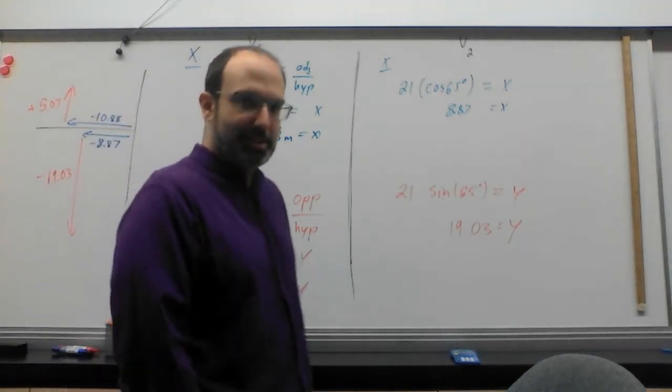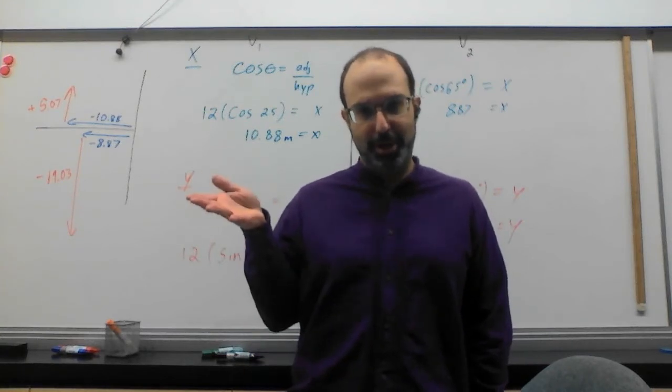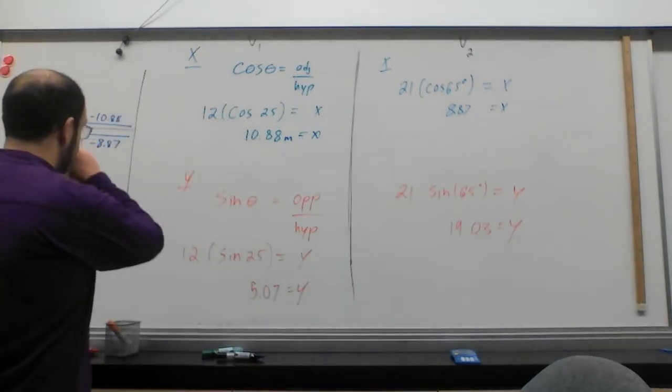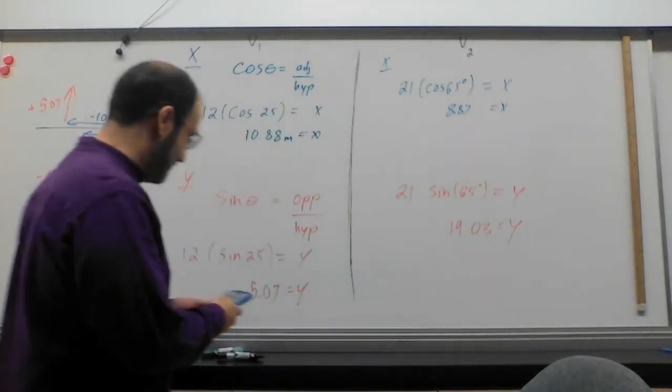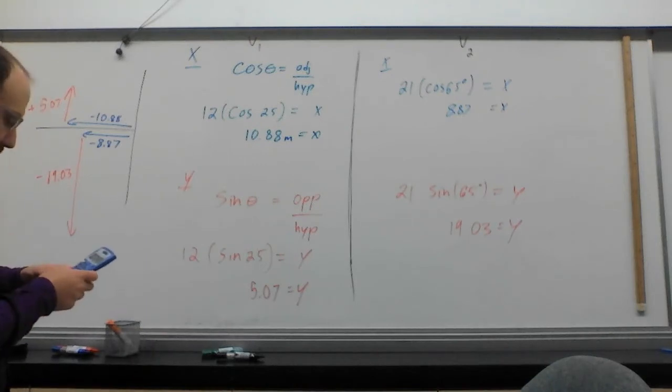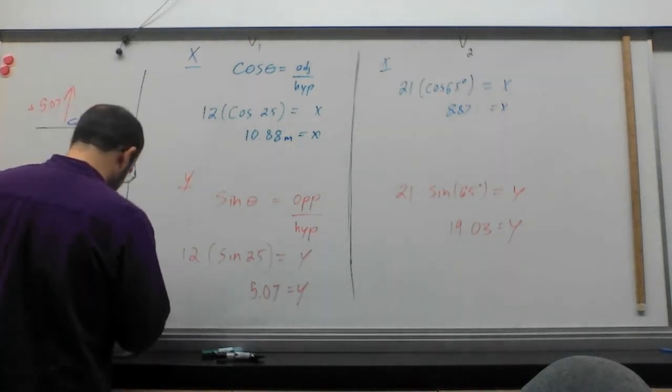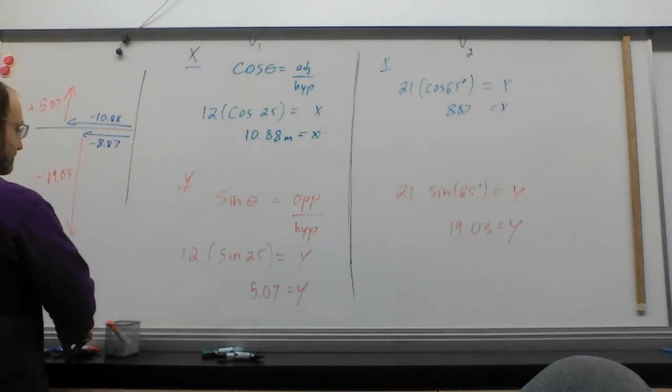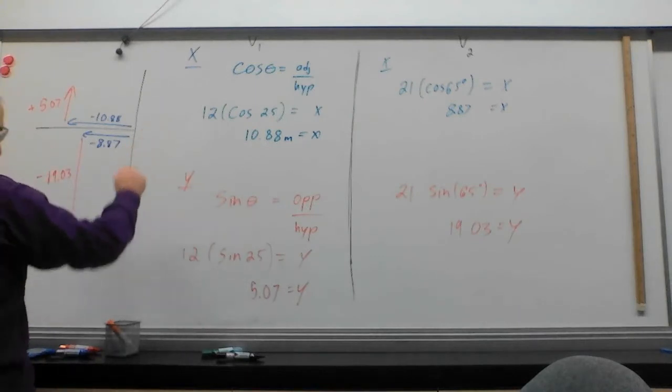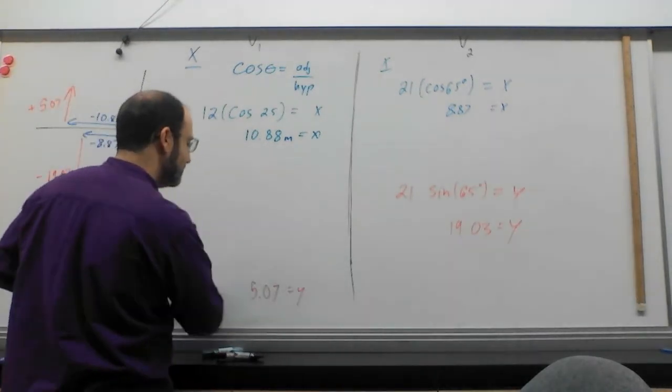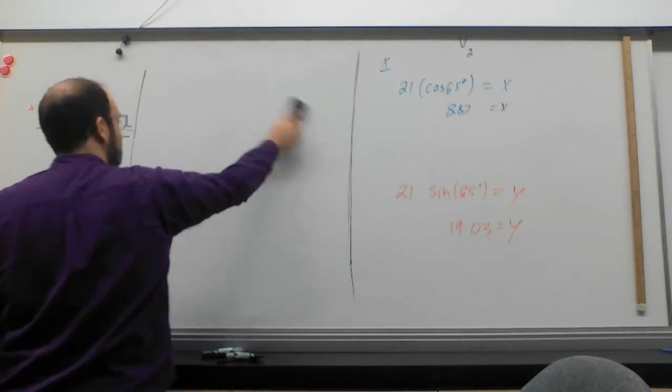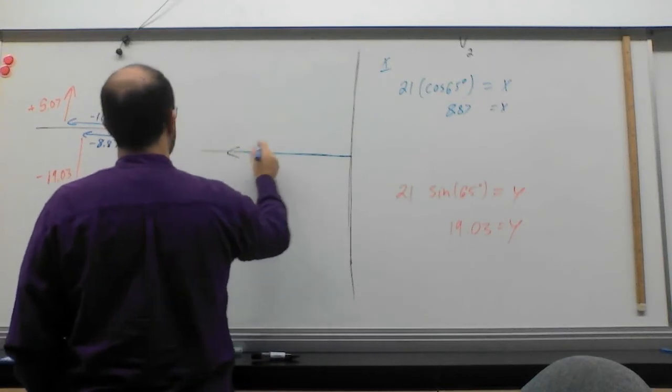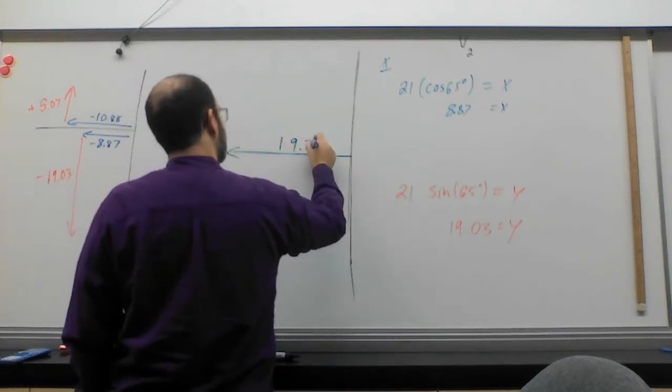I can now add these using one dimensional vector addition. New problem into an old problem. When I do that, I'm going to get 10 plus 8. So we're looking at about 19 point something. Let's take a look at exactly what we get. 10.88 plus 8.87. Helps if you put a decimal in there. 19.75. So this can be redone, can be combined together with one dimensional vector addition.